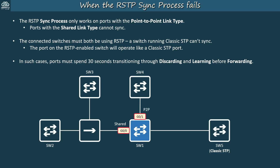Here's a sample network from SW1's perspective. G0/0 is connected to SW2 and SW3 via a hub and uses the shared link type. G0/1 is connected directly to SW4 using the point-to-point link type. G0/2 is connected directly to SW5 using the point-to-point link type, but SW5 is running classic STP. G0/1 will be able to sync with SW4 — the link type is point-to-point and both switches run RSTP. However, G0/0 and G0/2 won't be able to sync: G0/0's link type is shared, and G0/2 connects to a switch running classic STP. So they will spend 15 seconds in discarding and 15 seconds in learning before transitioning to forwarding. In a modern LAN where all switches run RSTP, these situations shouldn't occur.